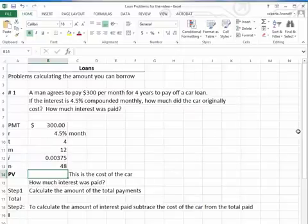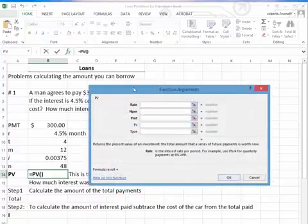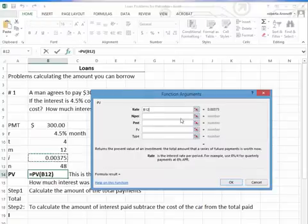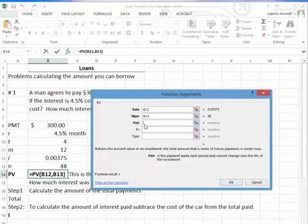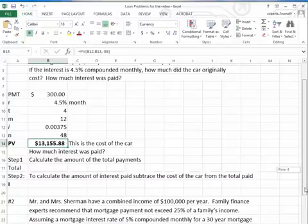And now we want to be able to determine the present value, the amount of the loan. So I'm going to go to present value. The rate is the I. The N is the 48. The payment is the $300 that the man promised to pay per month. And that tells us that the man can borrow $13,155.88.